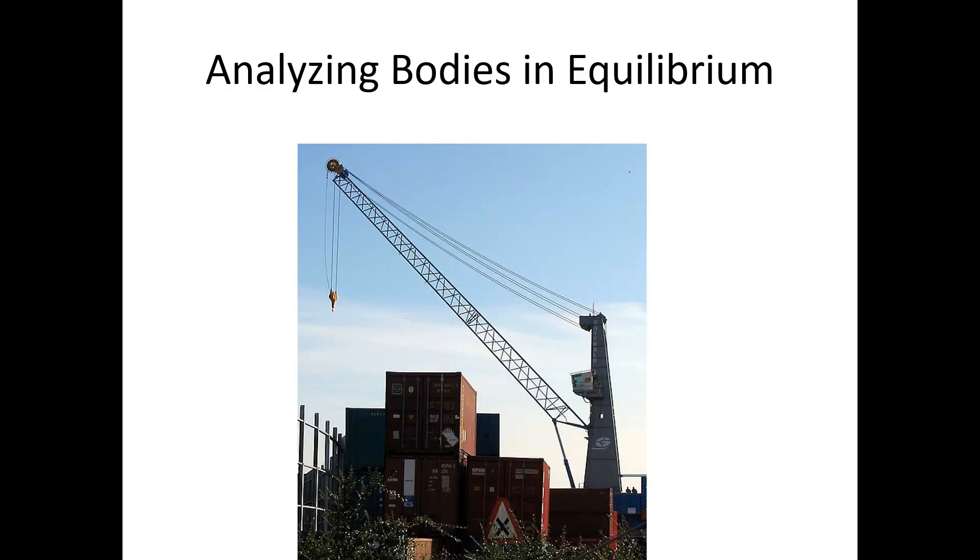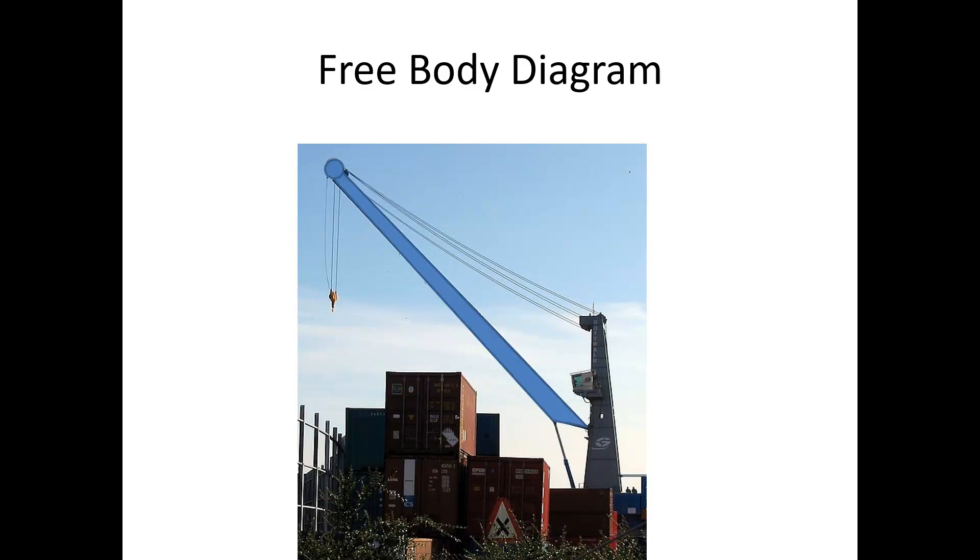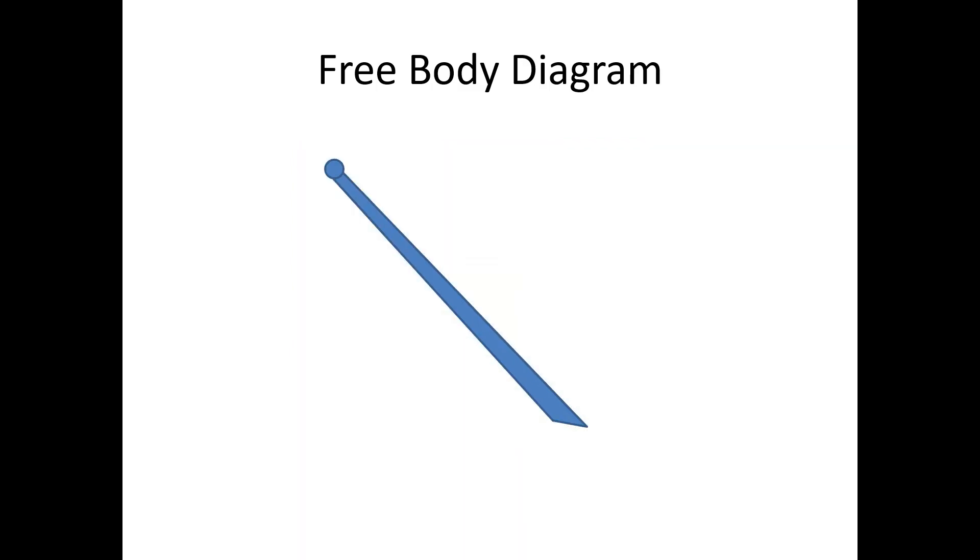When I analyze bodies in equilibrium, generally I'm going to be looking for the forces. If I'm looking at the arm of the crane, I'm looking for these tension forces in the cable and the supporting forces down there at the bottom. If I want to find those, I would go through the following process. I'd start with a free body diagram. I draw the arm of my crane, get rid of the background. I'm going to draw in the forces that I am looking at or looking for. These may be known or unknown values.